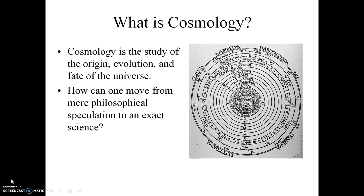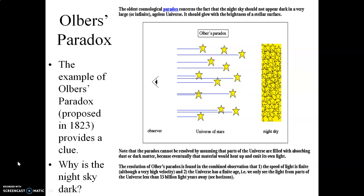Well, with respect to cosmology becoming an exact science, what is referred to as Olber's Paradox, which was first proposed in 1823, provides a clue. Olber's Paradox basically asks the following: why is the night sky dark?